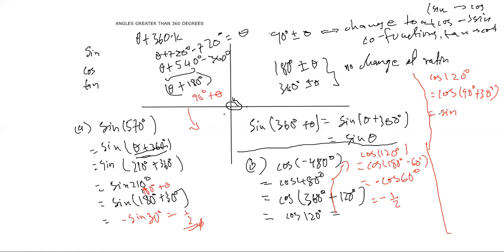This is the quadrant where we have 90 plus theta. So cosine should be negative here, and then I must have 30. And we know sine 30 is 1 over 2. So that's how you could have gone about this.